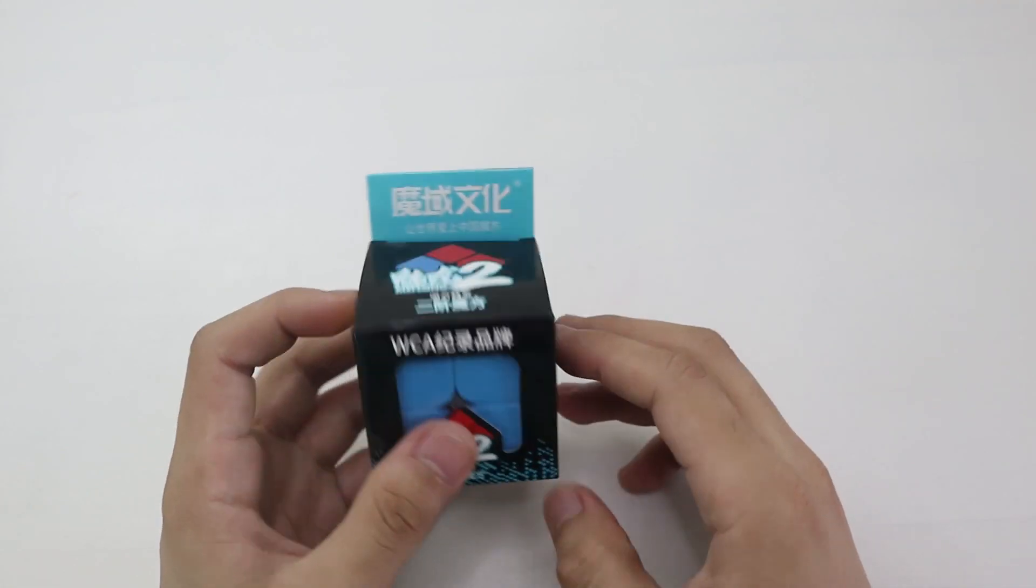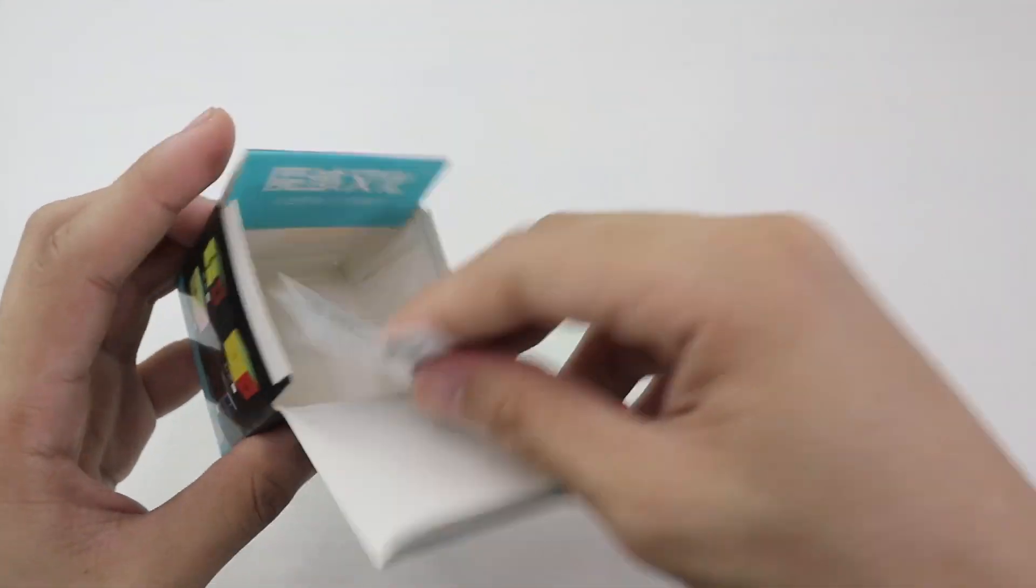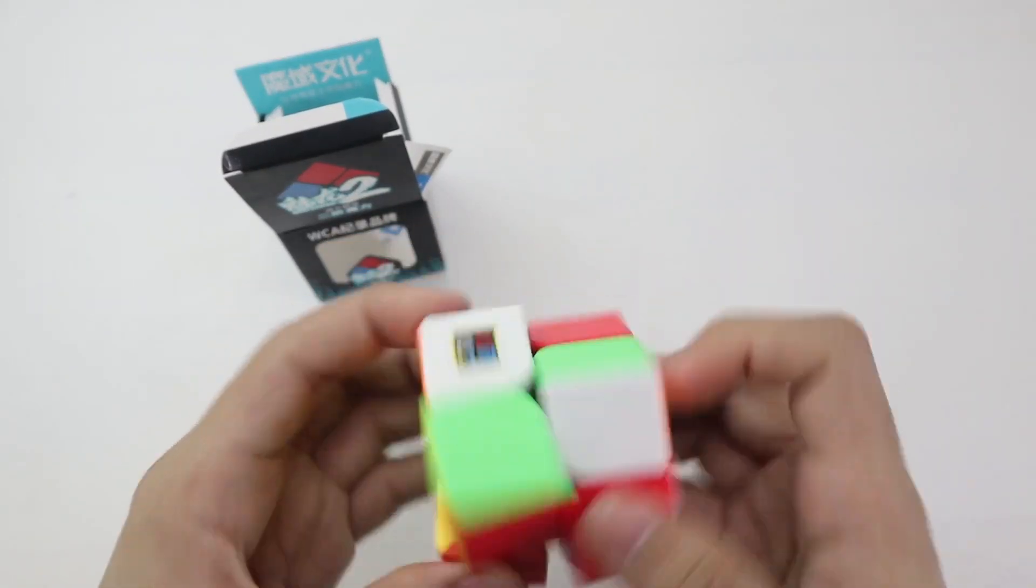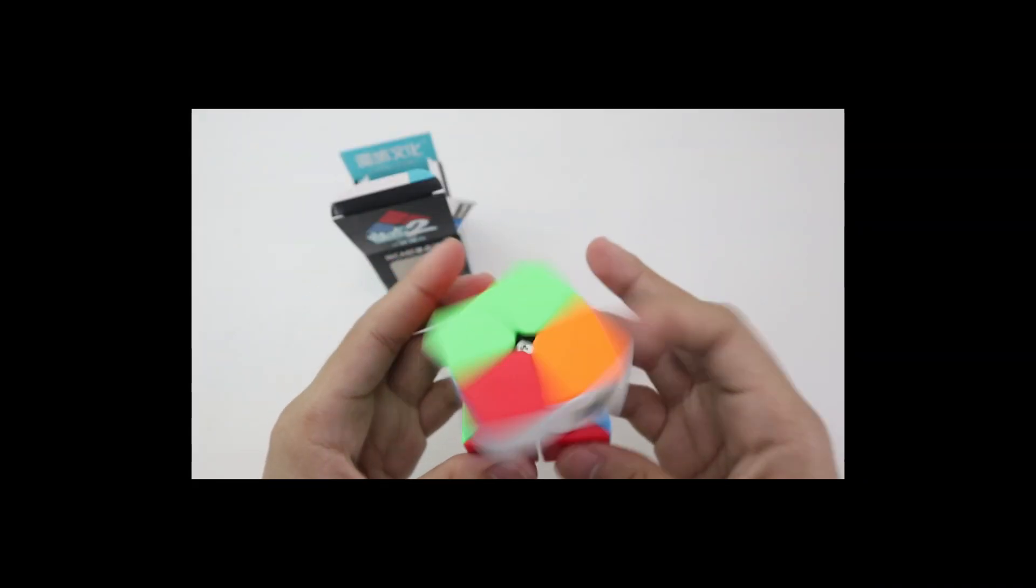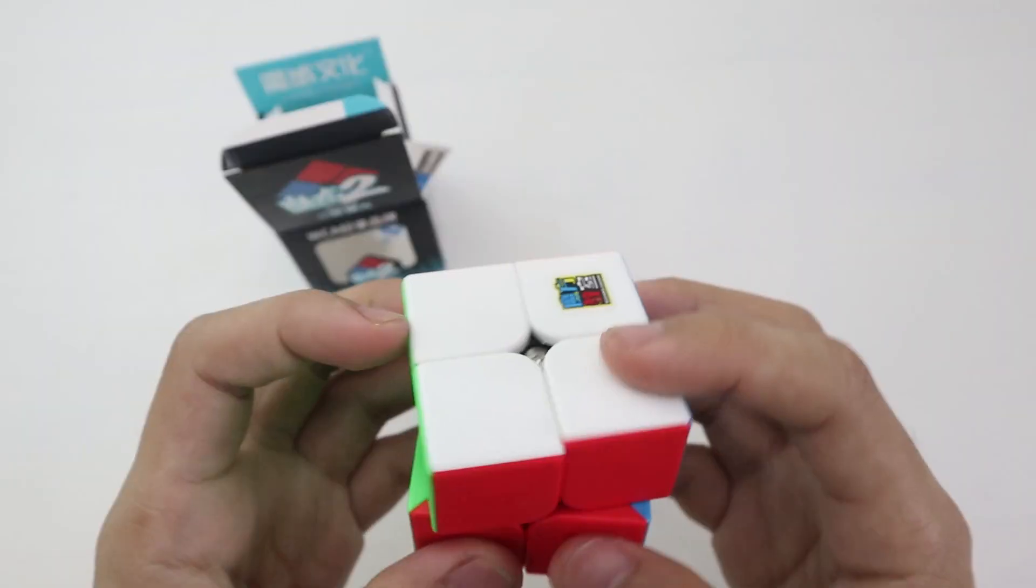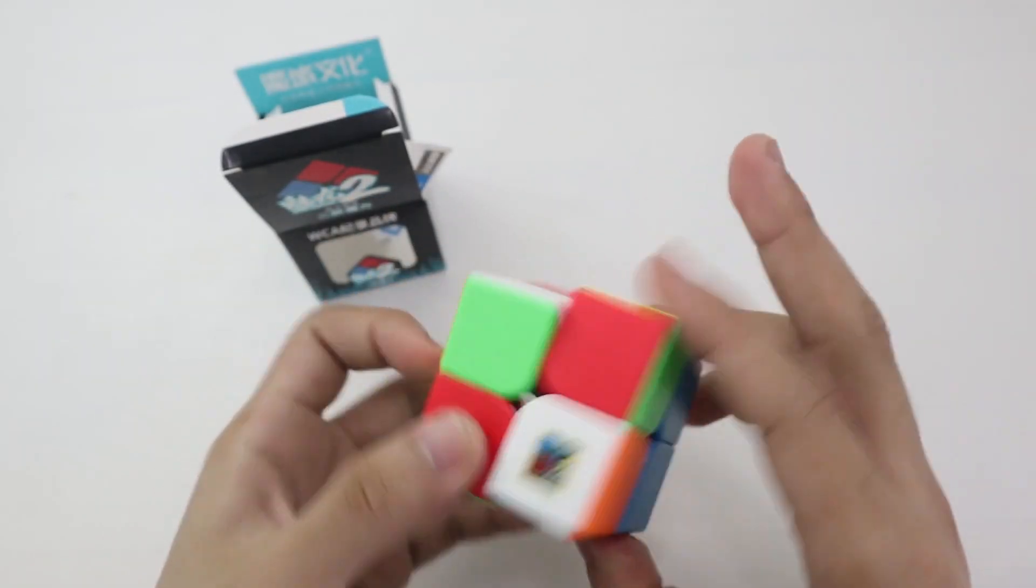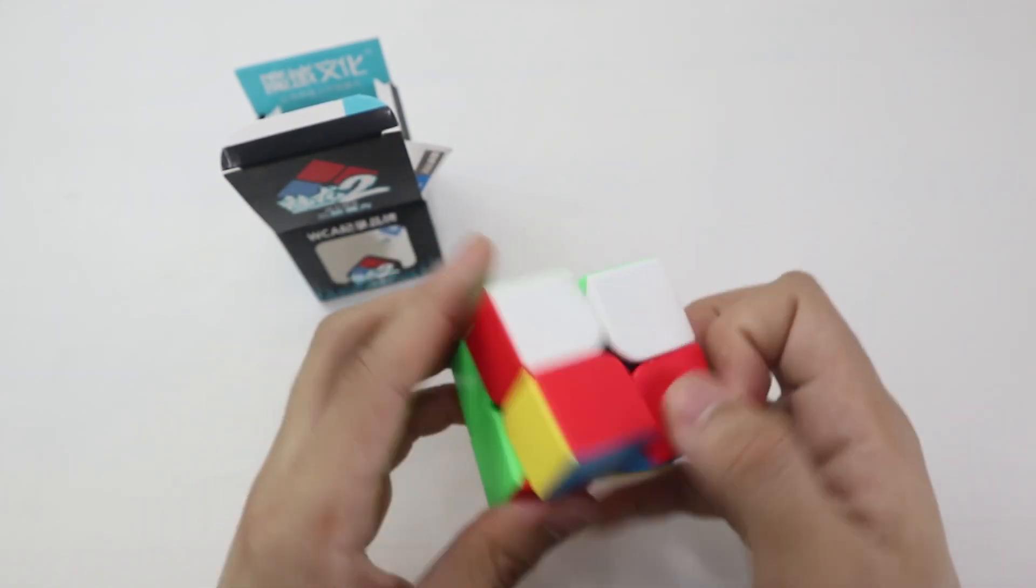First on the checklist is this Meilong 2x2 from MoYu, specifically from MoFang Jiaoshi. This is the non-magnetic version of it and right off the bat, I would not recommend this 2x2 for a couple of reasons. Number one, it's non-magnetic. But Sayer, you can purchase the magnetic one, right? I know, but if you're really interested in getting that, why not? But this version is just not so good. It's not stable and that's the reason number two.